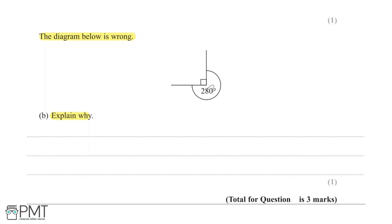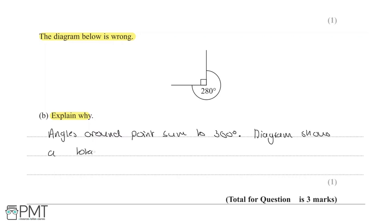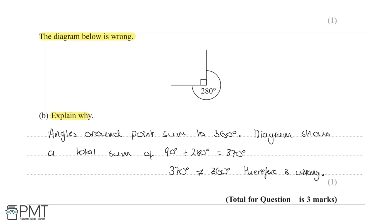Part (b) asks us to explain why the diagram is wrong. Angles around a point should sum to 360 degrees. The diagram shows a right angle (90 degrees) plus 280 degrees, giving a total of 370 degrees. Since 370 degrees does not equal 360 degrees, the diagram is wrong. You get one mark for any acceptable answer conveying this idea.